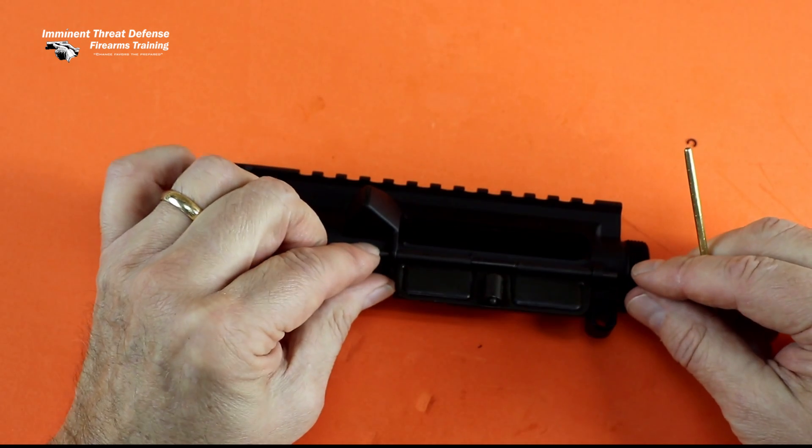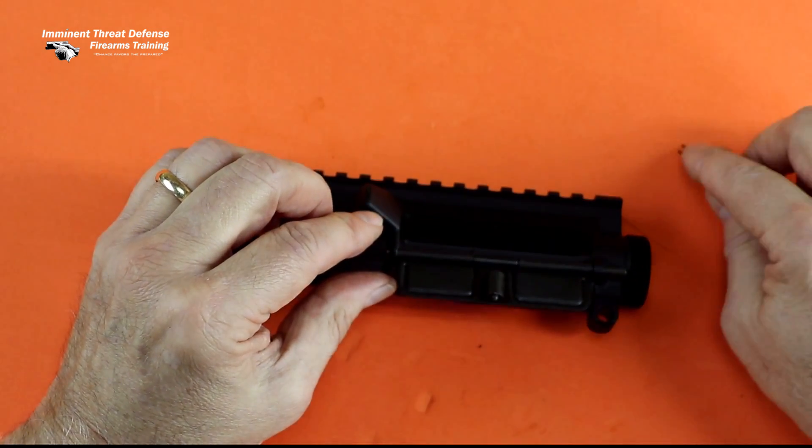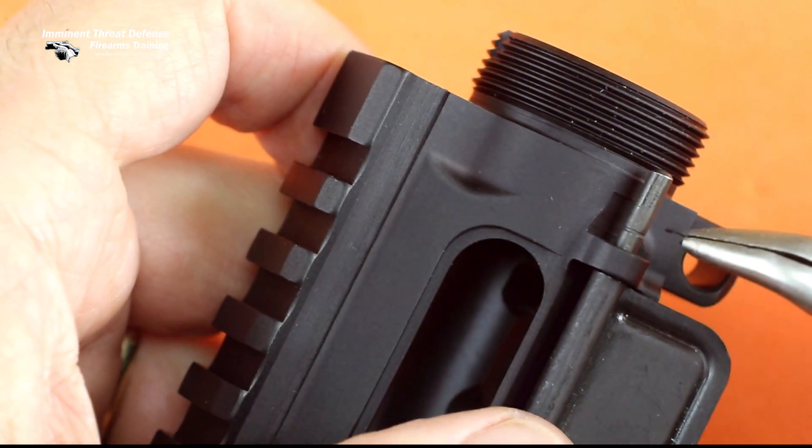So with the barrel installed the pin can't slide forward. And to keep it from sliding back we've got this little tiny E-clip that goes into that groove on the end of the pin.